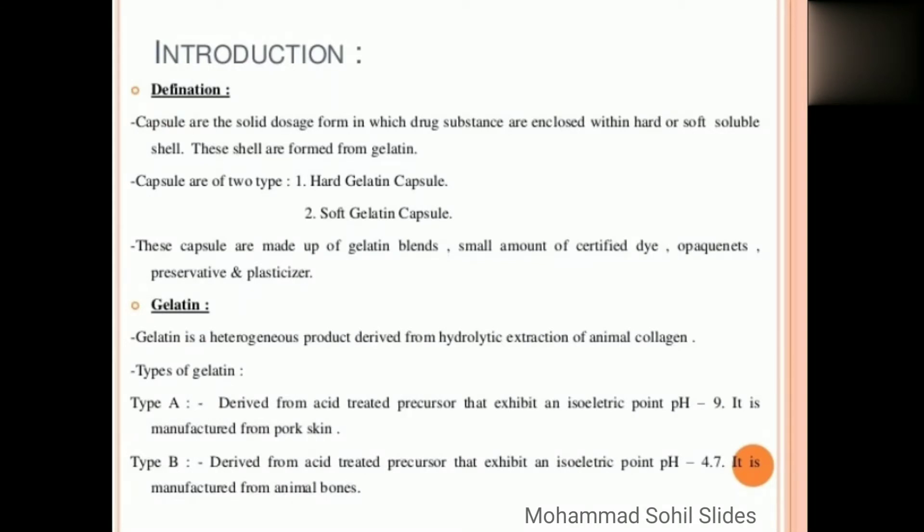Then Type B gelatin: it is derived from acid-treated precursor that exhibits an isoelectric point at pH 4.7. It is manufactured from animal bones.